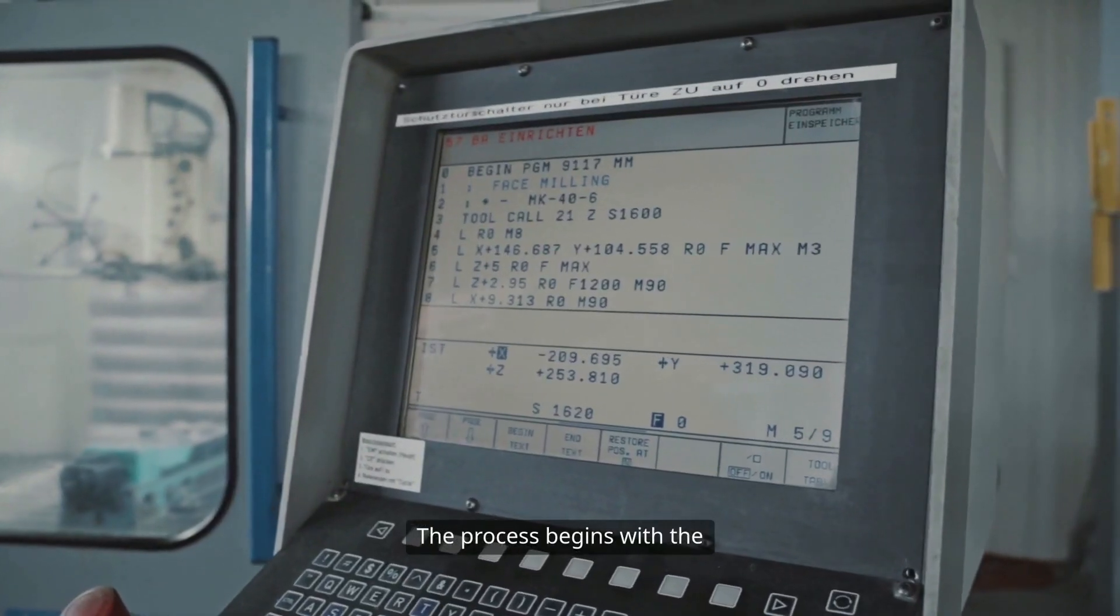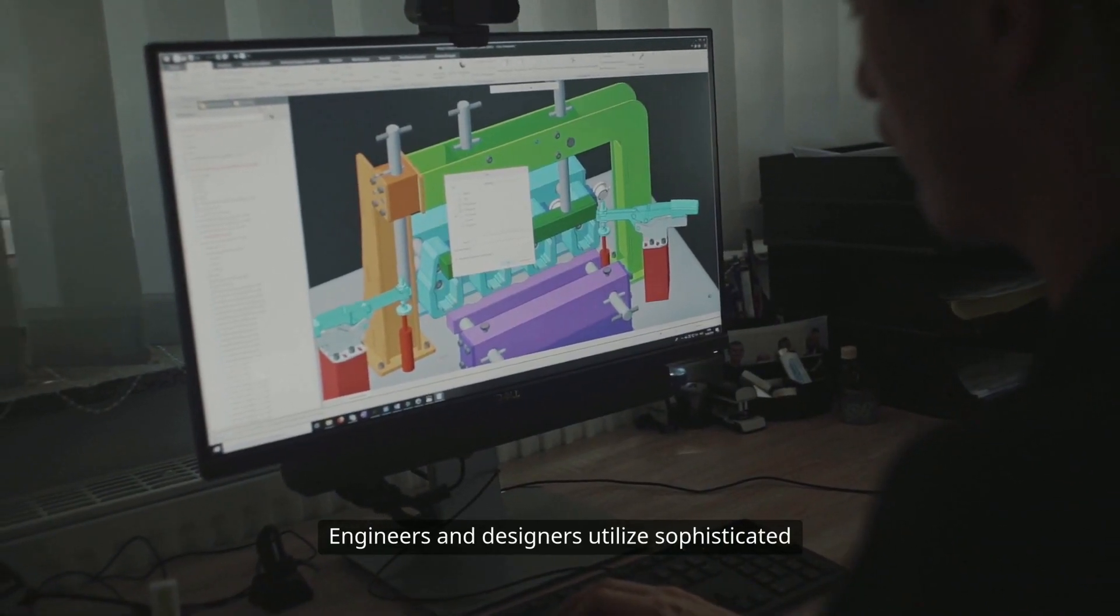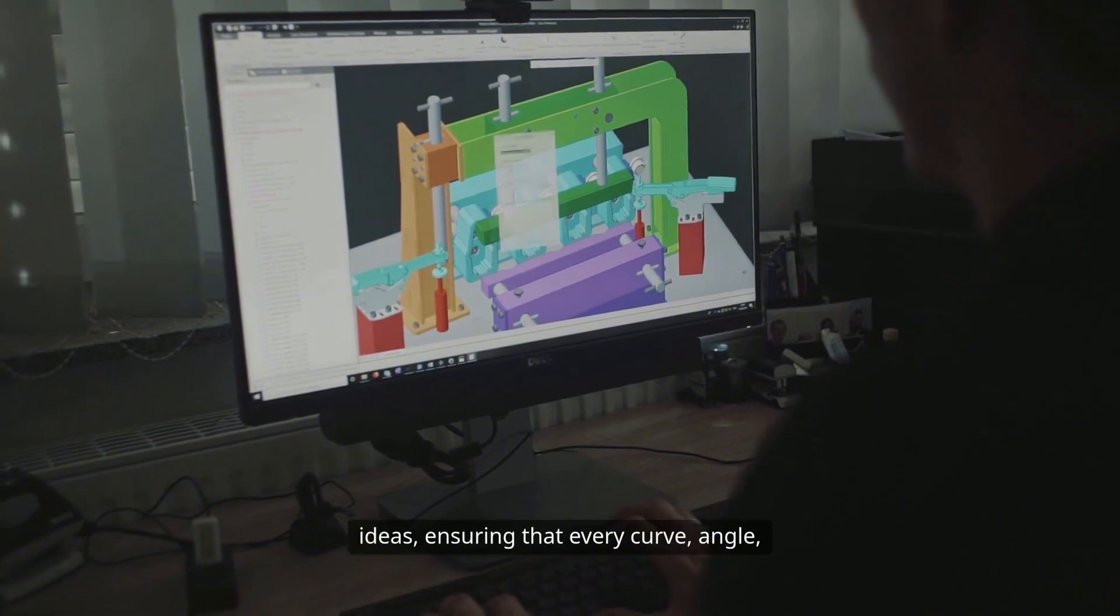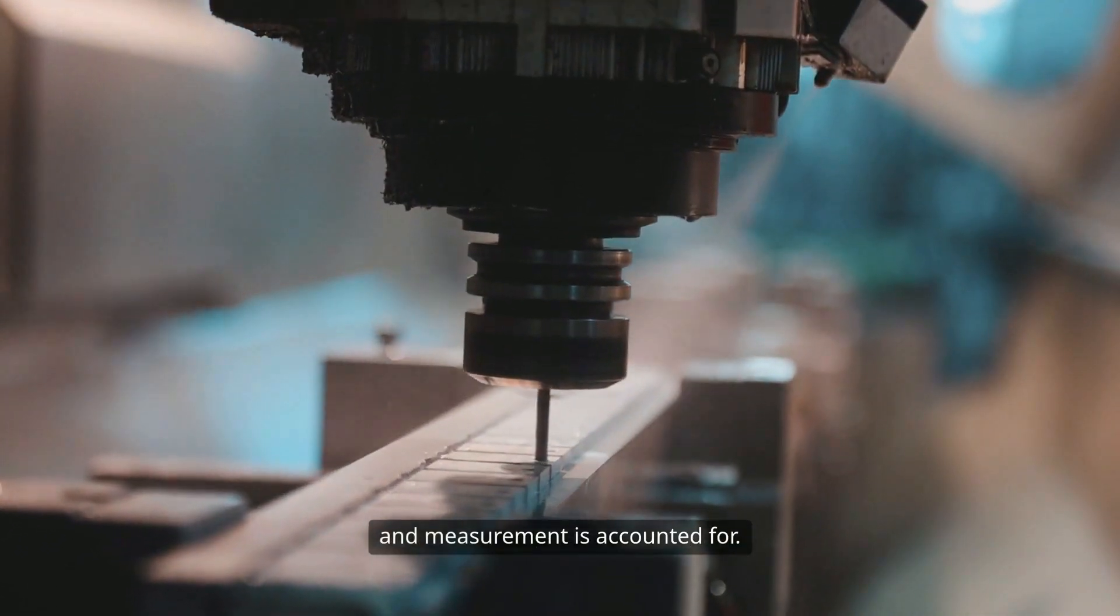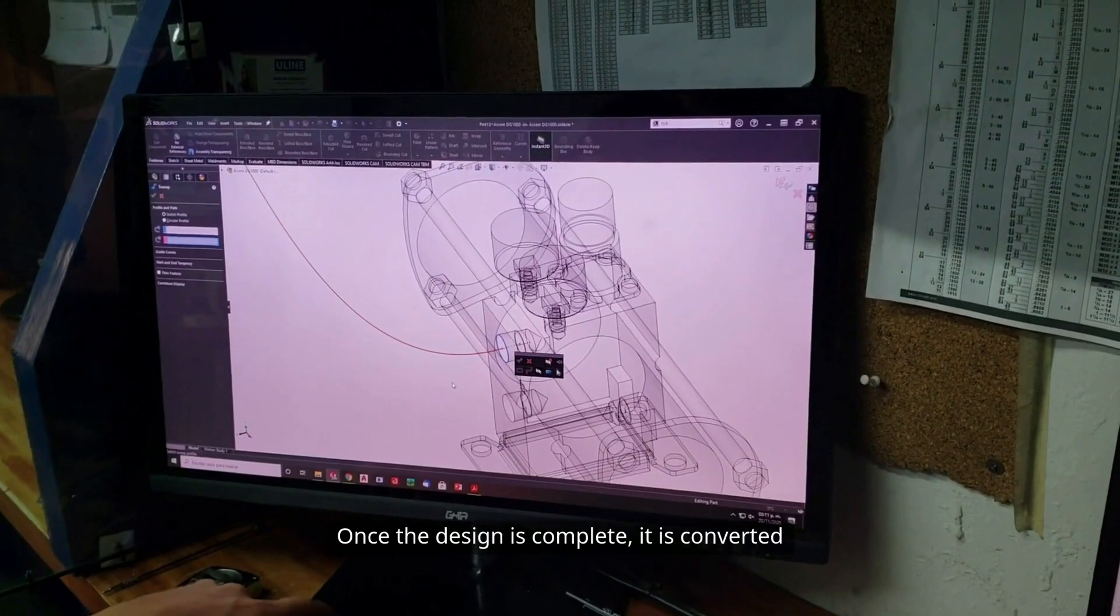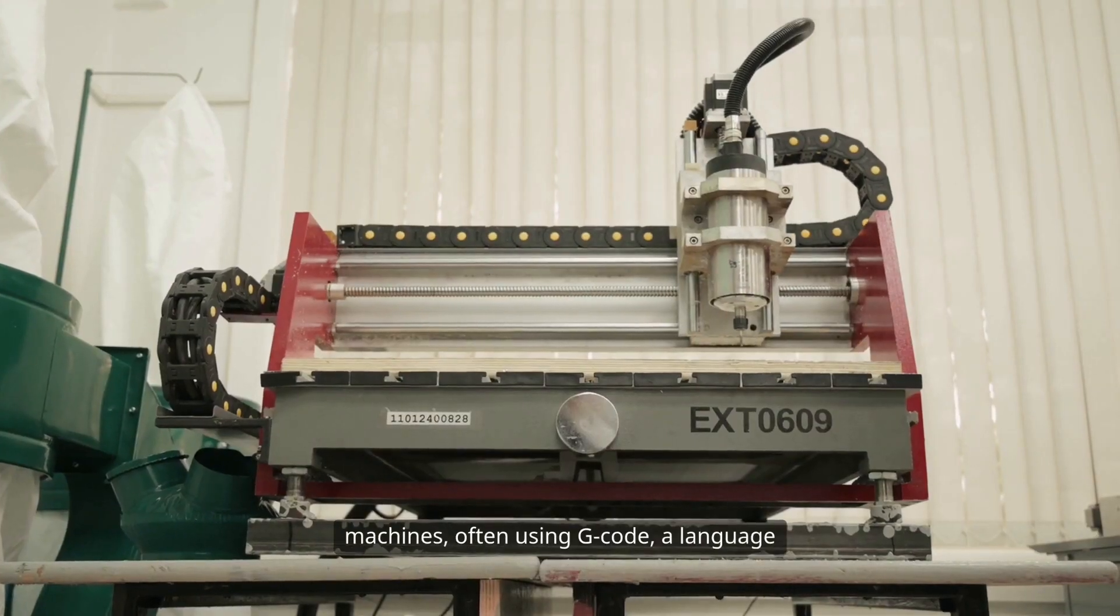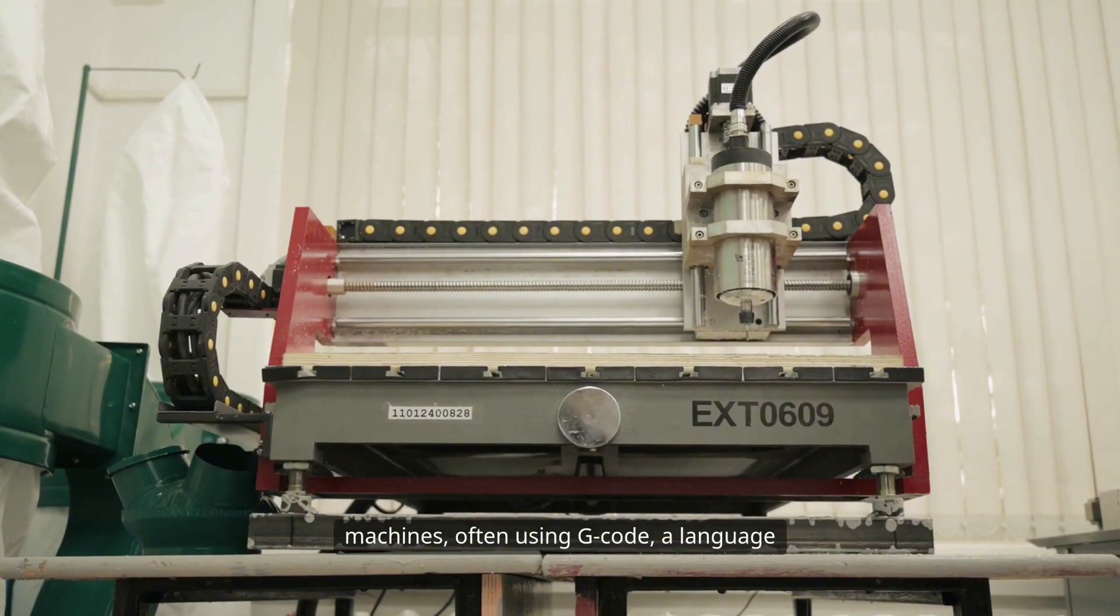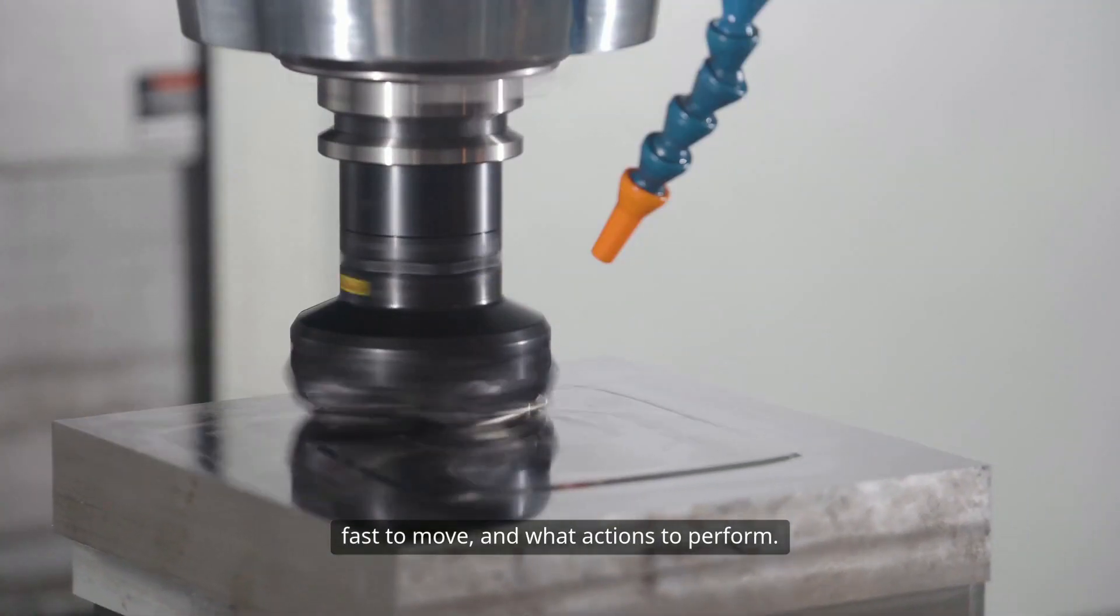The process begins with the creation of a detailed design. Engineers and designers utilize sophisticated software to draft their ideas, ensuring that every curve, angle, and measurement is accounted for. Once the design is complete, it is converted into a format compatible with CNC machines, often using G-code, a language that tells the machine how to move, how fast to move, and what actions to perform.